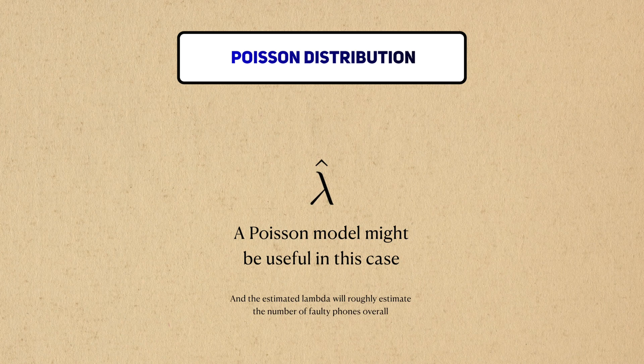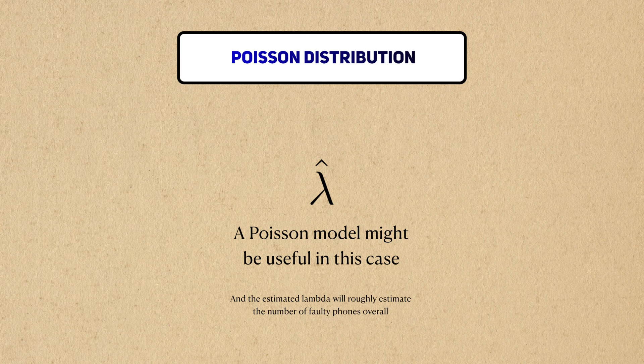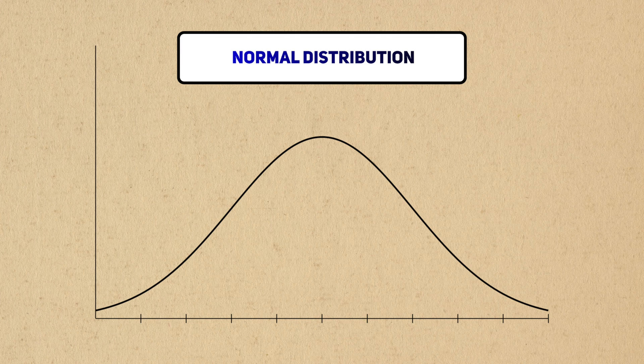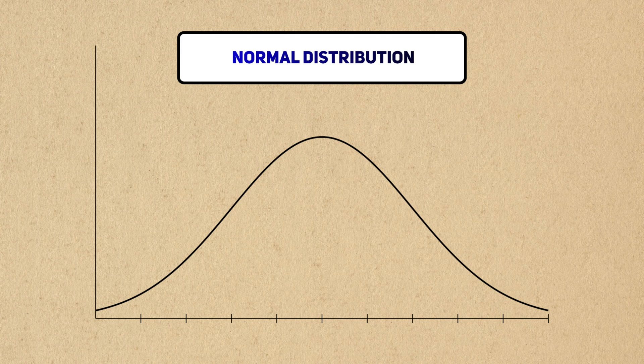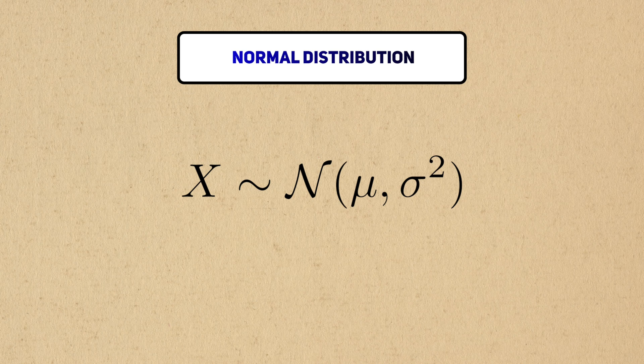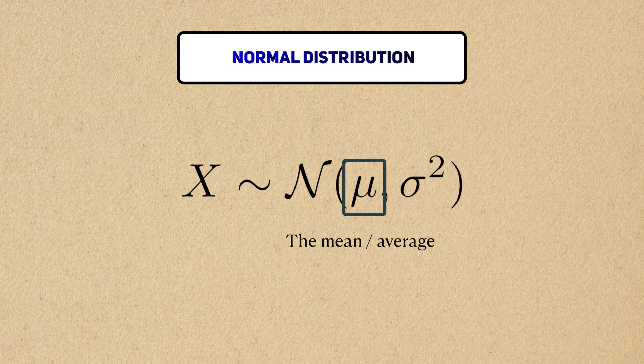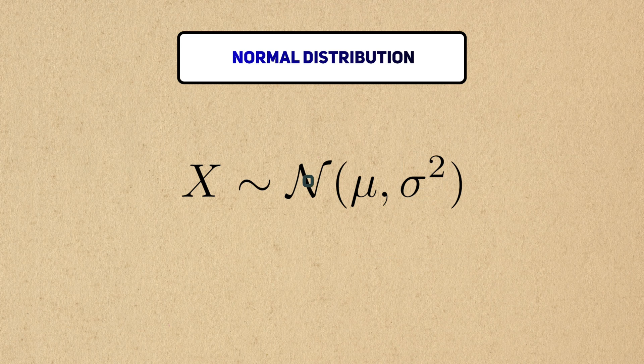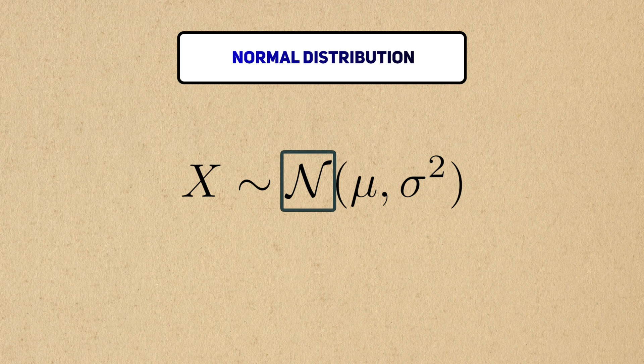The normal distribution is too large of a topic to cover in just this video, so we'll focus on its parameters. Like the uniform distribution, the normal distribution has two parameters, the mean, which we usually denote mu, and the variance, which we denote sigma squared. The normal itself is usually denoted with some kind of fancy n. The normal distribution has a famous symmetric bell shape. It's not the only distribution with the bell shape, but it's most well-known for this.